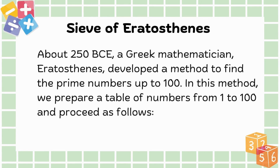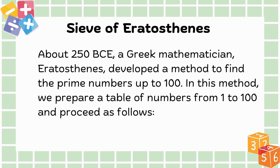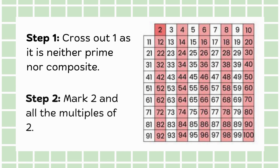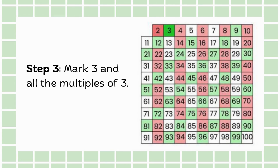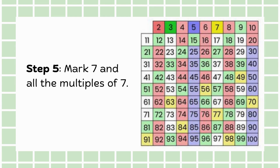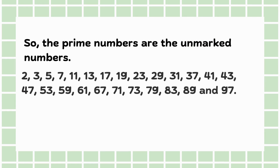About 250 BCE, a Greek mathematician, Eratosthenes, developed a method to find the prime numbers up to 100. In this method, we prepare a table of numbers from 1 to 100 and proceed as follows. Step 1: Cross out 1, as it is neither prime nor composite. Step 2: Mark 2 and all the multiples of 2. Step 3: Mark 3 and all the multiples of 3. Step 4: Mark 5 and all the multiples of 5. Step 5: Mark 7 and all the multiples of 7. The prime numbers are the unmarked ones.